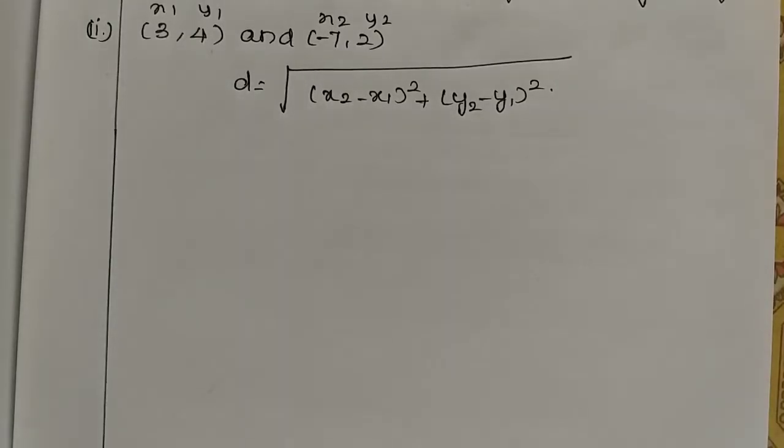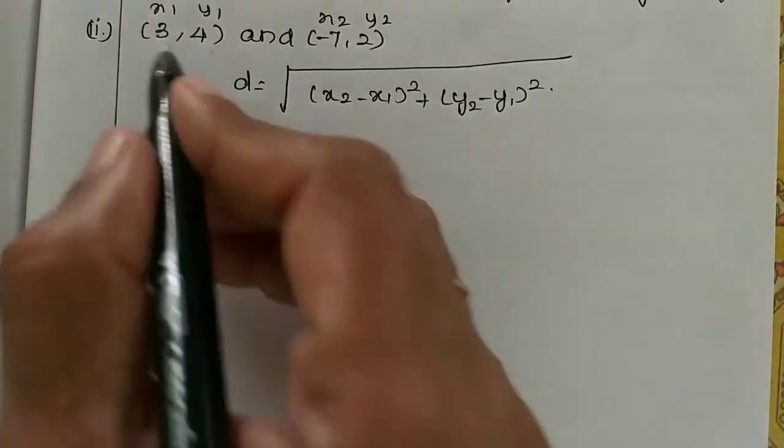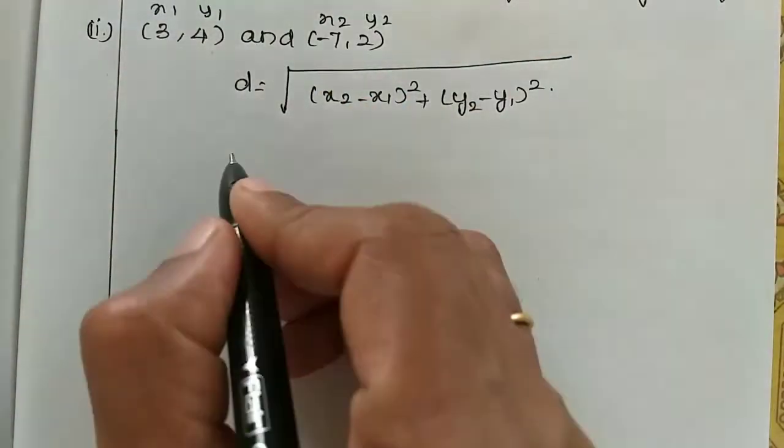So second subdivision, (3,4) and (-7,2). Distance formula is x1, y1, x2 mark. Okay.